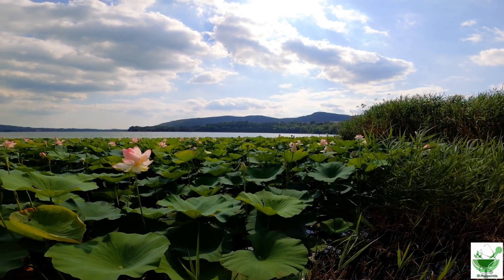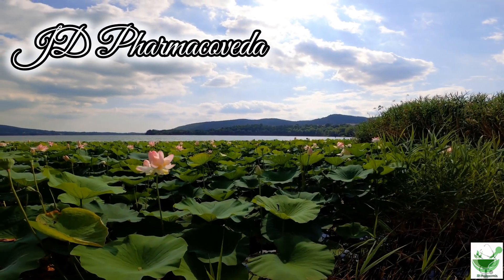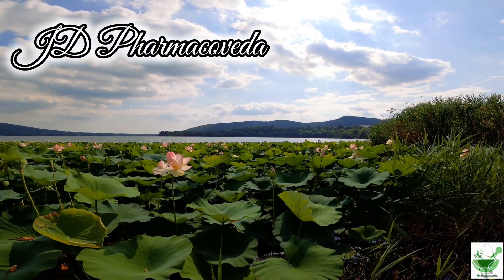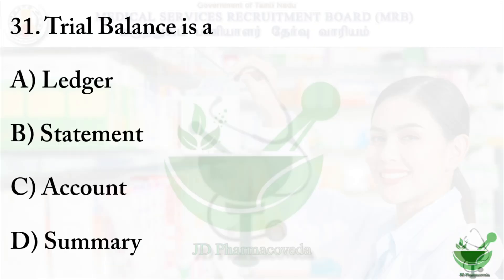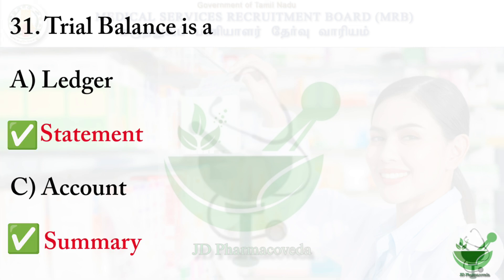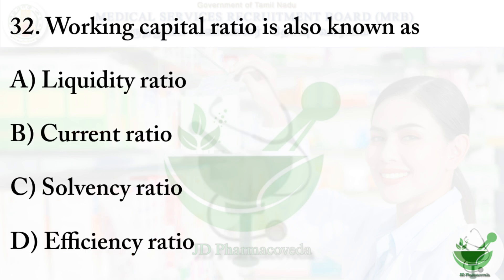Hello viewers, welcome to our channel JD Pharmacaveda. In this MRB Pharmacy set of videos, let's discuss from question number 31. Trial balance — the options are: option A ledger, option B statement, option C account, option D summary. The correct options are option B and D, so trial balance is a statement or summary.